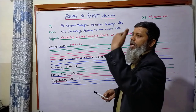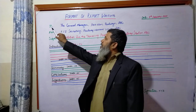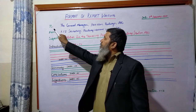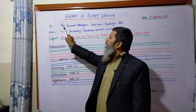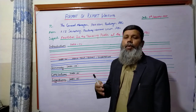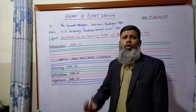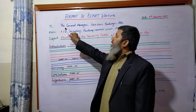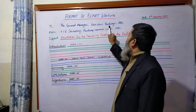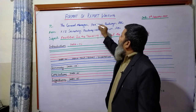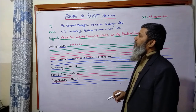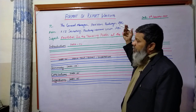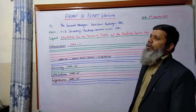On the left-hand side on the next line, you will write 'To', followed by a colon. You will write to whom you are going to address the report. On the left-hand side you will write the designation — for example, General Manager, Pakistan Railway, ABC city. ABC means it can be any city; if you want to mention the name of the city, you can.